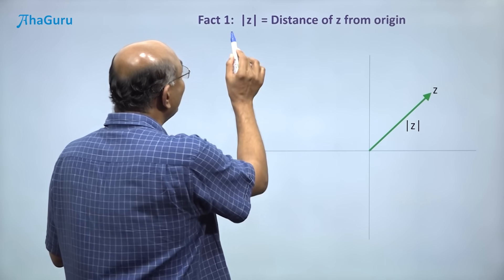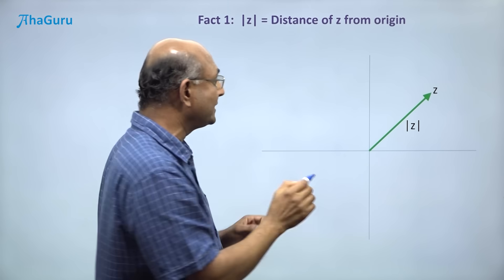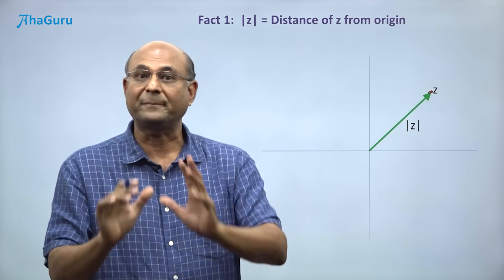Fact 1: Modulus of z is just the distance of z from the origin. So if you pick a point here, this distance is what modulus z represents.